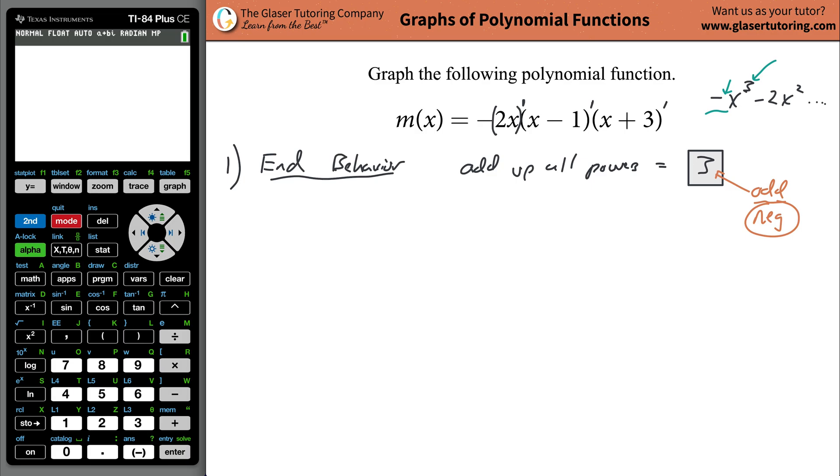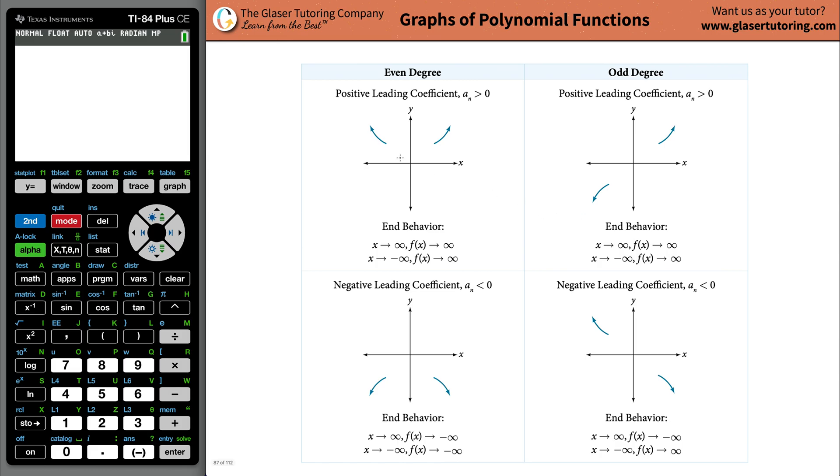Now, what we do is we have to understand what is having an odd highest power and being a negative leading coefficient mean in terms of the end behavior. Well, here's a nice little chart. And what we have now is we have an odd degree and we have a negative leading coefficient. So this is going to be the picture that's going to detail the end behavior. Why do these end behaviors come about from even and odd degrees and positive leading coefficients? I actually have a video out there that explains that. But that's not necessarily the point of this video.